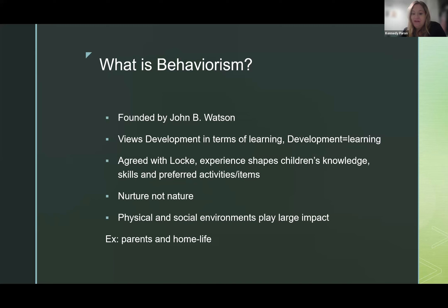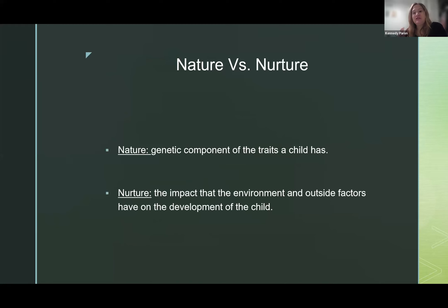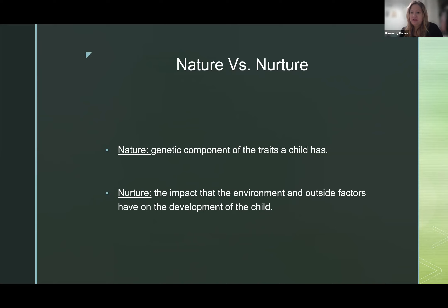Physical and social environments play a large impact in child development. Examples would be parents and home life playing a large part in their developmental journey. Nature would be the genetic component of the traits that children have, where nurture refers to the impact of the environment and outside factors on the development of a child — how their parents raised them, how their school environment is, versus the genetic component of what we're predisposed to do.